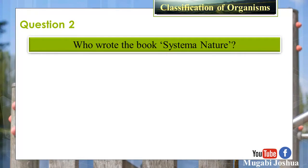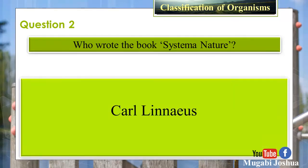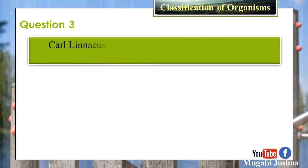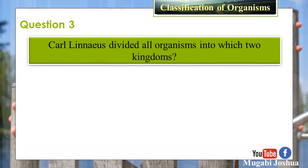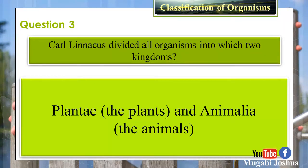Question 2: Who wrote the book Systema Naturae? Answer: Carolus Linnaeus. Question 3: Carolus Linnaeus divided all organisms into which two kingdoms? Answer: Plantae (the plants) and Animalia (the animals).